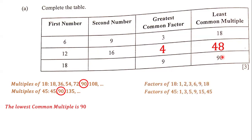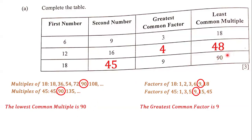Now let's check the factors. The factors of 18 are 1, 2, 3, 6, 9, and 18. The factors of 45 are 1, 3, 5, 9, 15, and 45. Indeed, 9 is the greatest common factor of 18 and 45. Since the lowest common multiple of 18 and 45 is 90 and the greatest common factor is 9, 45 is definitely the missing second number. So 4, 48, and 45 are the numbers that complete this table.